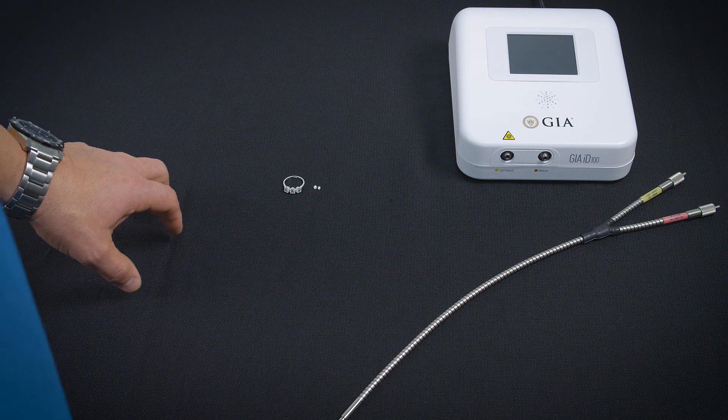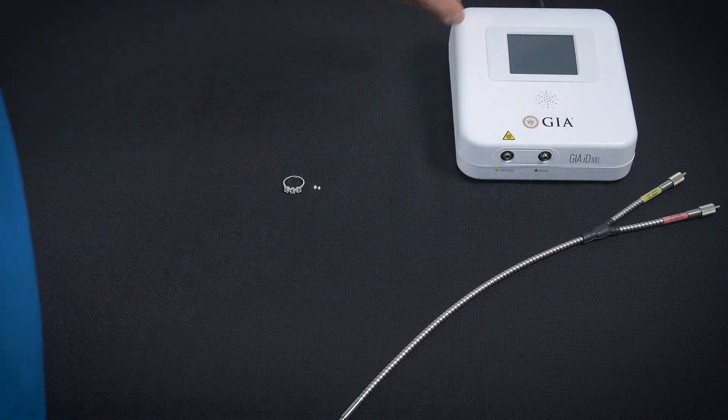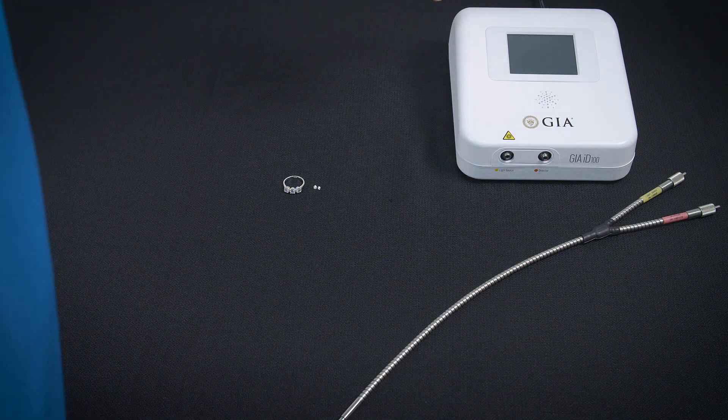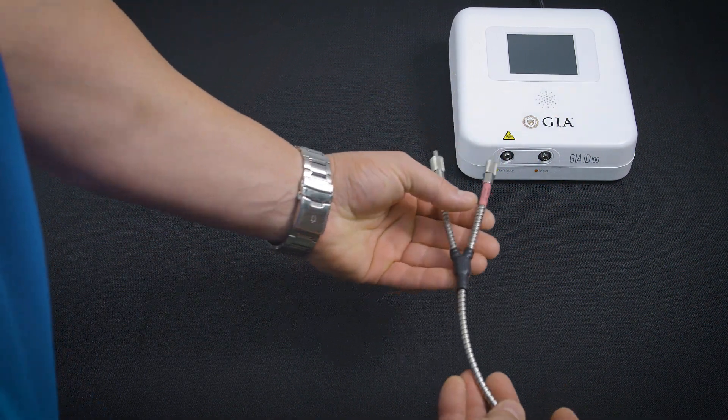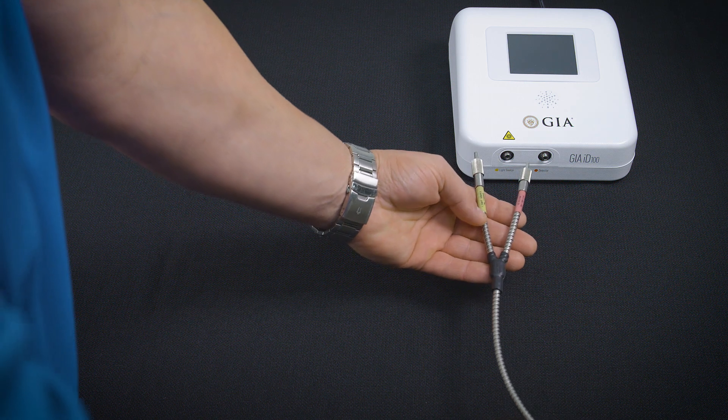First thing when you get your GIA iD100, you will plug the plug into the outlet. You will take your probe out of the box—it looks like this. It's color-coded: red matches red, yellow matches yellow.